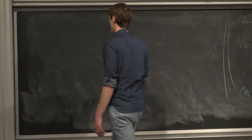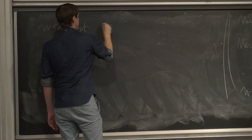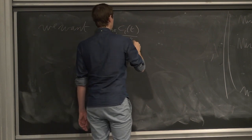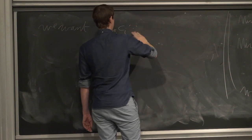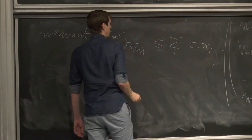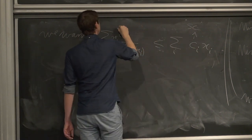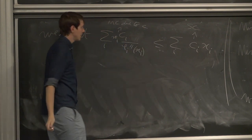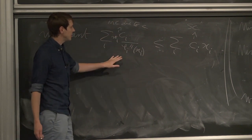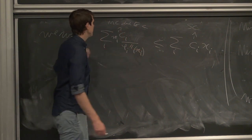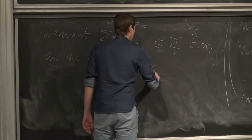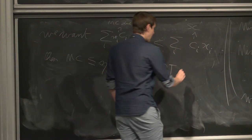We want the sum of c_i * w_i / phi_i''(x_i) to be bounded by the sum of c_i * x_i. The left side is the movement cost due to c, and the right side is the service cost. If we have this inequality and there's no Lagrangian part, then the movement cost would be smaller than eta times the service cost, which is smaller than eta times opt — implying you're eta-competitive.